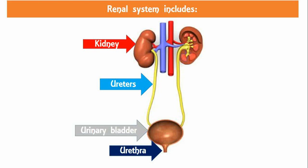The urinary bladder is a muscular sac in the pelvis, just above and behind the pubic bone. When empty, the bladder is about the size and shape of a pear. The urethra is a tube that connects the urinary bladder to the urinary meatus for the removal of urine from the body of both females and males.